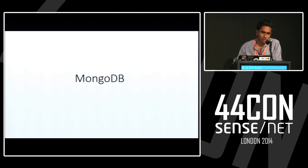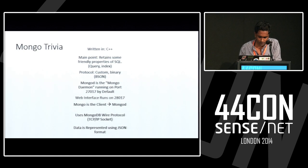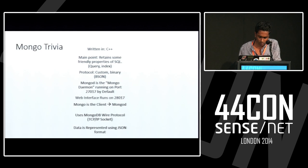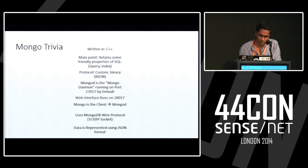Let's get hold on each of the databases, starting with MongoDB. MongoDB is written in C++. It retains the friendly properties of SQL. It uses the BSON protocol. You have Mongod as the server and the Mongo client. It runs on port 27017 by default, and the web interface runs on port 28017 (27017 plus 1000). It uses the MongoDB wire protocol, represented in JSON format.